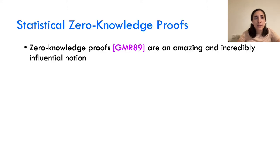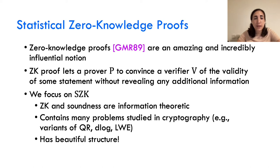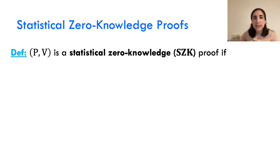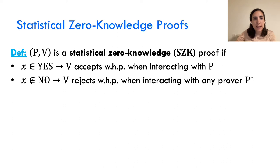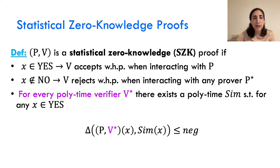As you all probably know, zero-knowledge proofs are an amazing idea. A zero-knowledge proof lets a prover convince a verifier of the validity of some statement without revealing any additional information. In this talk, we focus on statistical zero-knowledge, for which both the zero-knowledge and the soundness are information-theoretic. A protocol is statistical zero-knowledge if it has the usual completeness and soundness properties, where the soundness is also against an unbounded prover. The zero-knowledge requirement is that for every polytime verifier there exists a polytime simulator such that the output of the simulator on some yes instance is distributed very closely to the distribution of the messages being sent by the prover and the verifier.